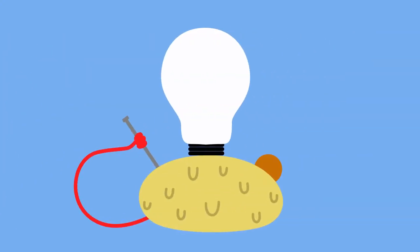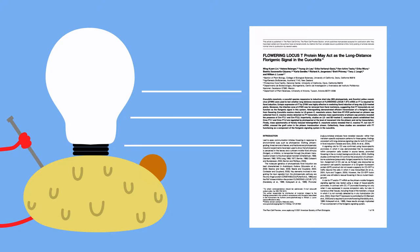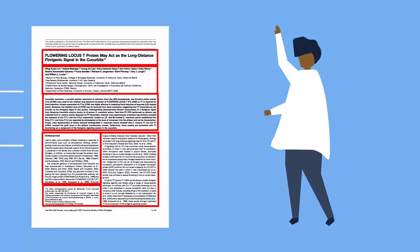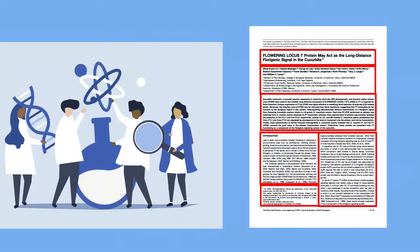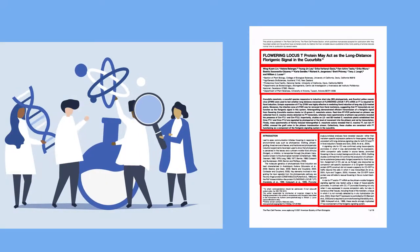When the results of the investigation are written up into a paper to be published, a set format is followed. Scientists must follow the format and rules of the journal where they intend to publish their work, so that other scientists can read and review their paper.